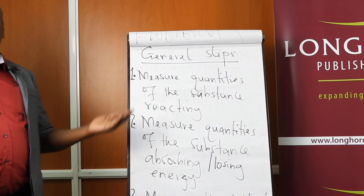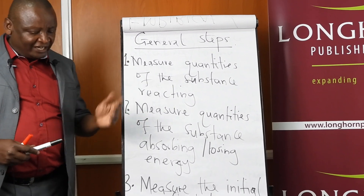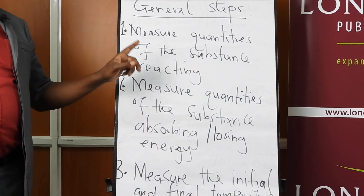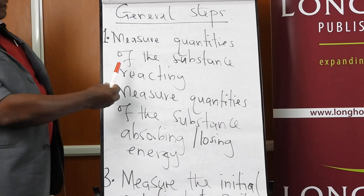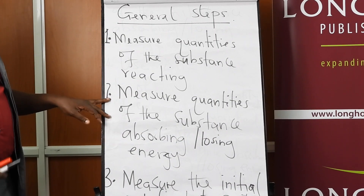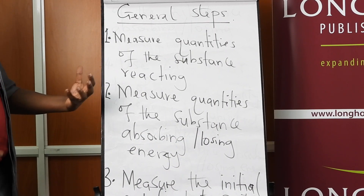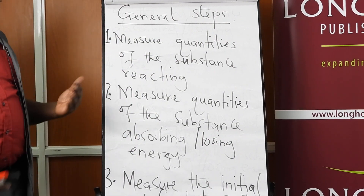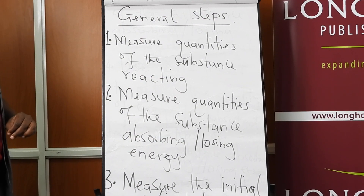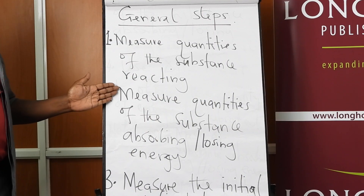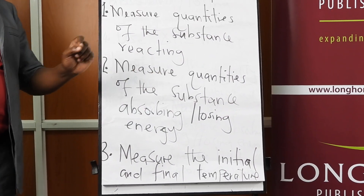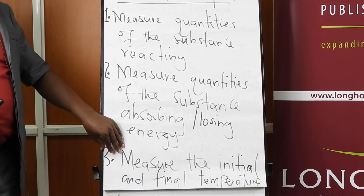The general steps involved in such experiments are: first, determine the quantity of the substance reacting — measure the quantity you are using; second, measure the quantity of the substance absorbing the energy, because you need to know how much energy will have been absorbed from the reaction. To find the amount of energy, you need the temperature changes — the initial temperature and the final temperature of the reactants.